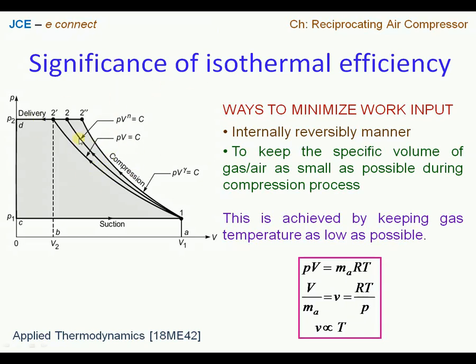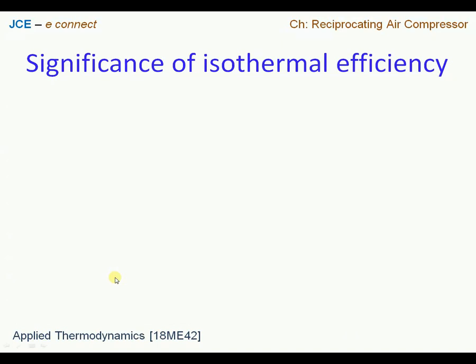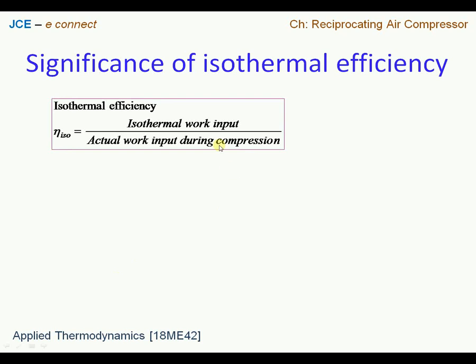Let us now look at isothermal efficiency, which is given as a ratio of isothermal work input to that of actual work input during the compression process. To keep the work input minimal, the compression process has to be under isothermal conditions. Therefore, the temperatures before and after compression have to be constant.